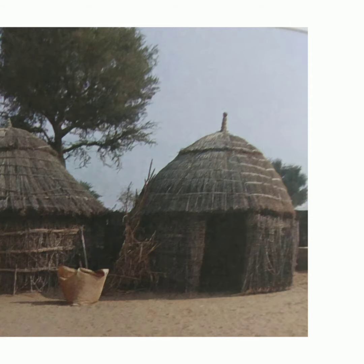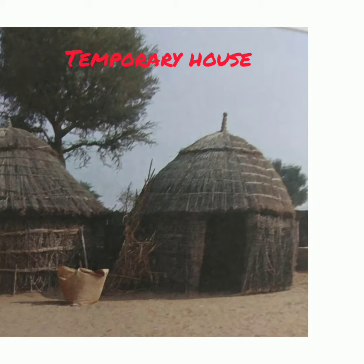Dear children, today we are going to learn about the different types of houses. There are mainly two different types of houses: one is temporary house and the other is permanent house.